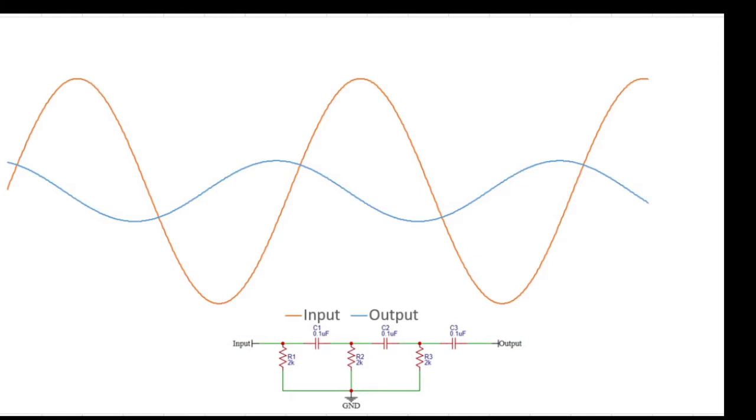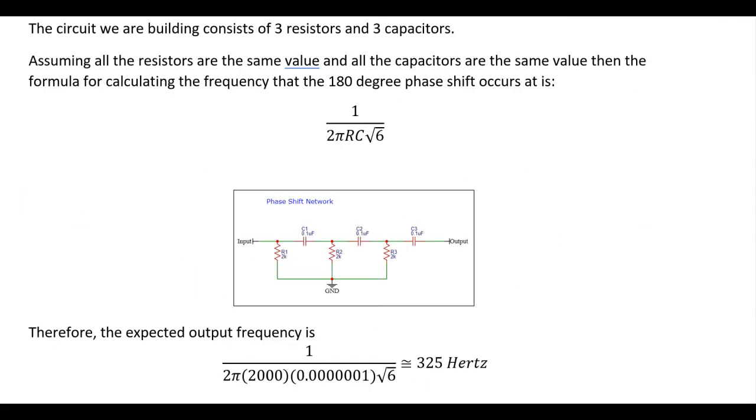And for one particular combination of component values and frequency, the phase shift itself is actually going to be a full 180 degrees, which basically means you get a smaller mirror image waveform on the output. And this is actually quite critical to how the oscillator works. The formula for calculating the frequency for a 3 resistor 3 capacitor RC network to get the 180 degrees phase shift is 1 over 2 pi RC times the square root of 6. And we can work out for our component values what the expected output frequency is.